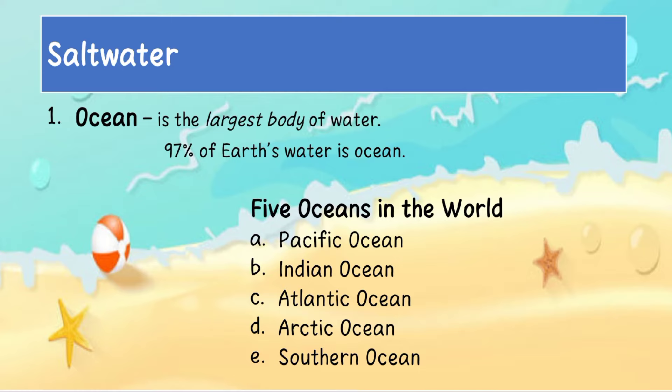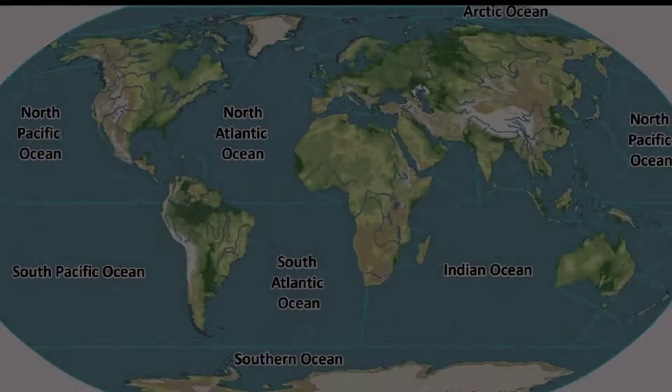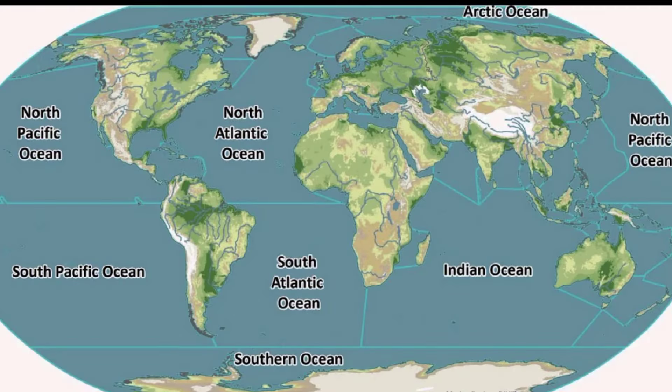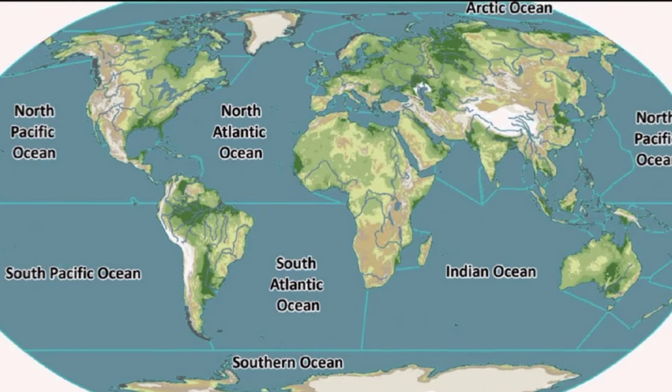There are five oceans in the world: Pacific Ocean, Indian Ocean, Atlantic Ocean, Arctic Ocean, and Southern Ocean. Here is the picture of the five oceans in the world.